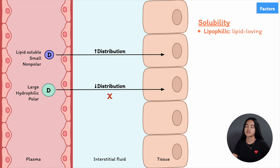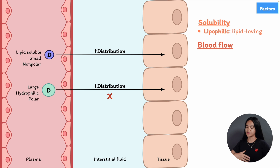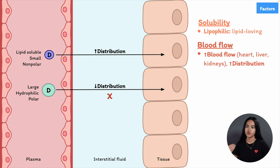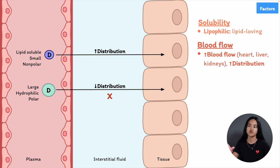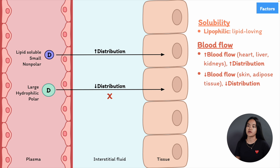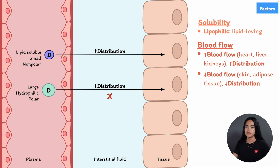The next factor is blood flow. Drugs are primarily distributed throughout the body through the blood. Tissues with high blood flow — such as the heart, liver, and kidneys — should theoretically receive greater drug concentrations than tissues with low blood flow, such as the skin or adipose tissues.